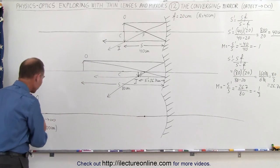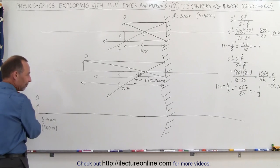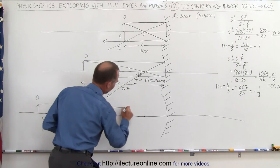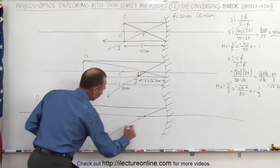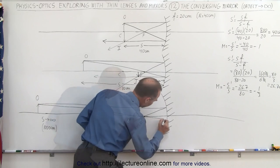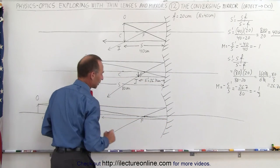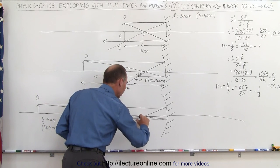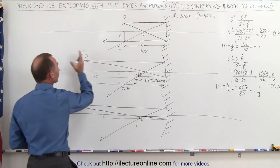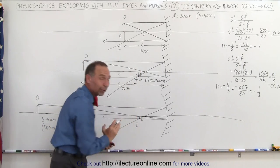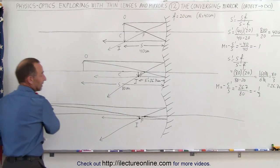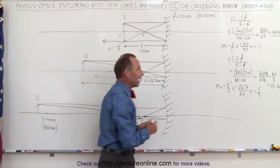Now imagine we move the object all the way out to a distance of 1,000 centimeters — really far away. We draw the first line parallel to the optical axis until it hits the mirror, then it reflects back through the focal point. Then we draw the second line through the focal point, and it bounces back reflected parallel to the optical axis. Where the two rays meet is now the image. You can see the image is very, very close to the focal point — still upside down. As the object moves farther away, the image gets closer and closer to the focal point but never closer than the focal point.